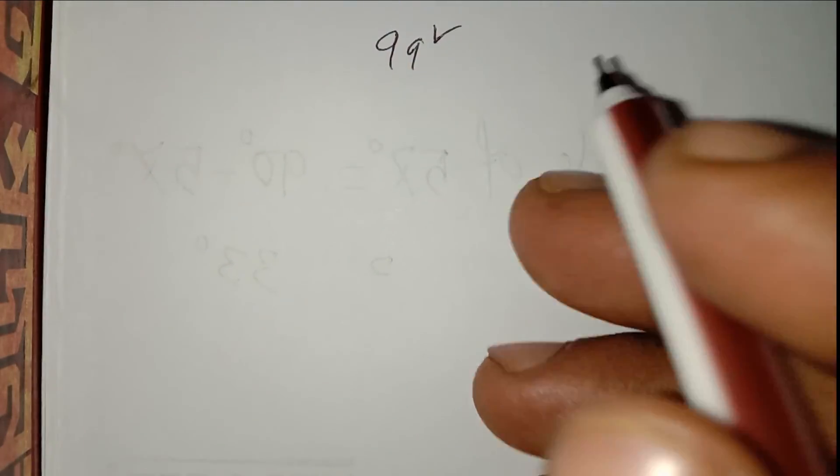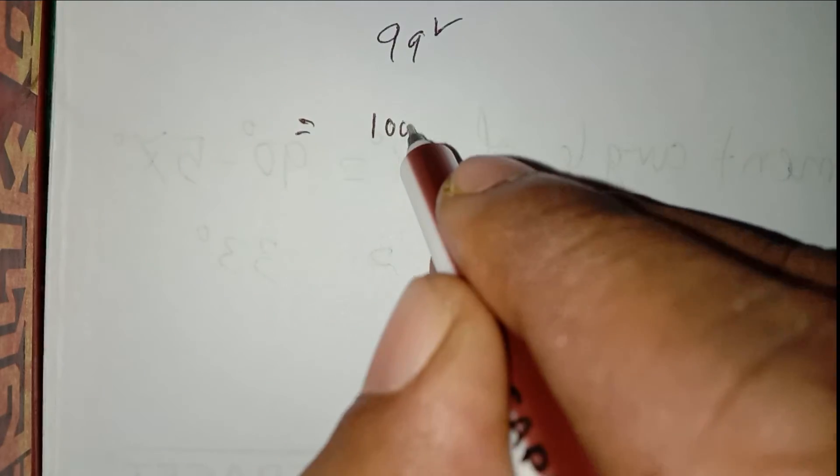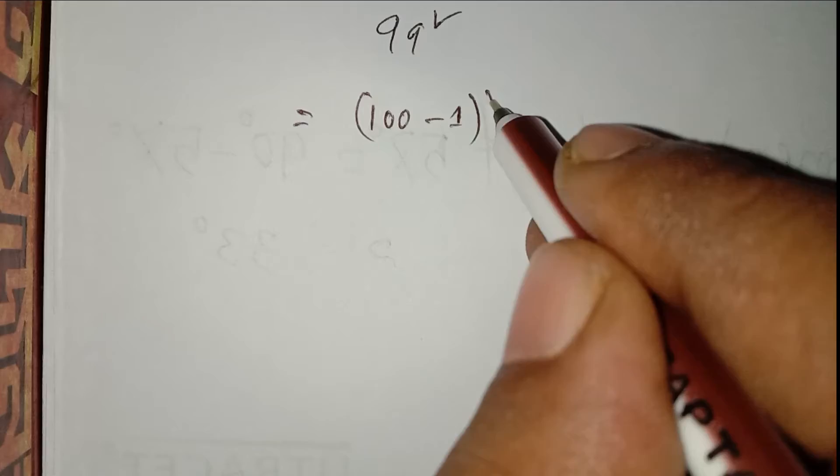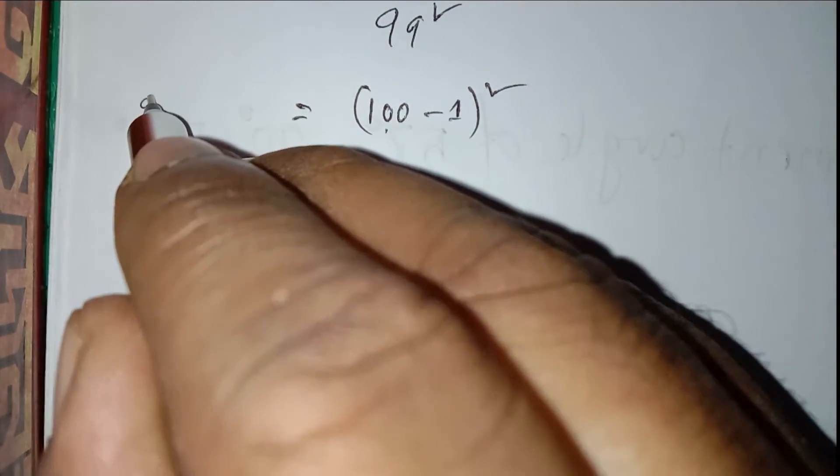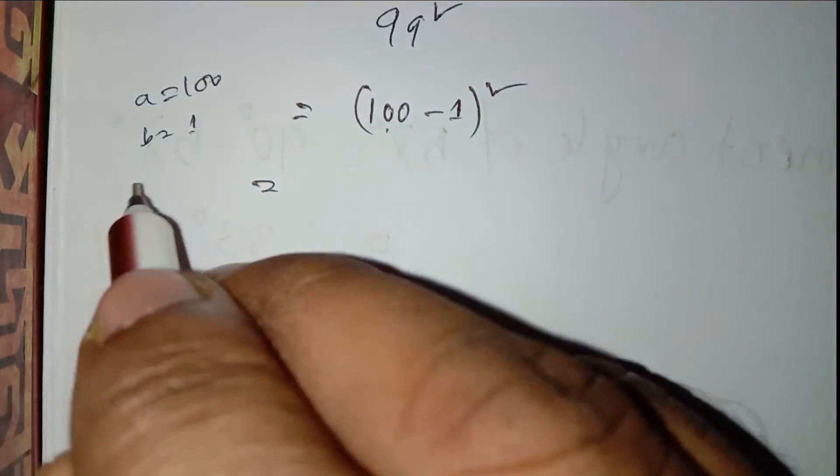Here is 99 square. So we write 100 minus 1 equals 99. Now let's see: a equals 100 and b equals 1. That means a minus b whole square.